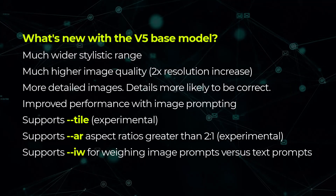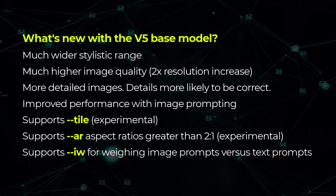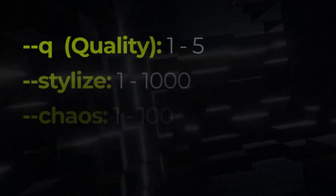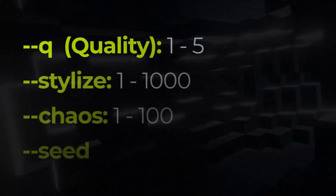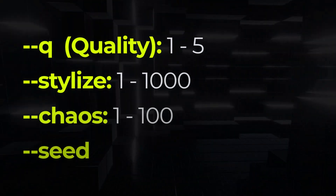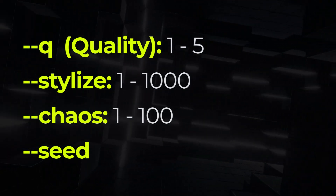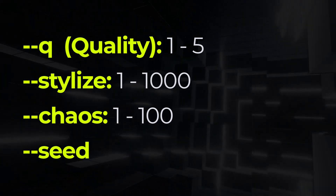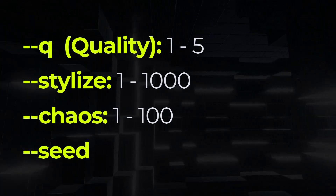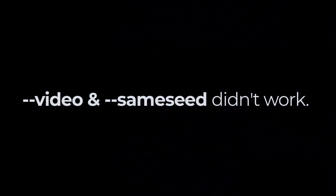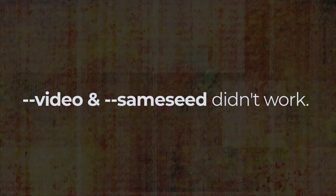I also experimented with a few other commands. I was able to get quality of 1 to 5 to work, stylized 1 to 1000, and chaos. Seed works too, and a lot of the other ones like prefer suffix and many of the global settings still work with version 5.